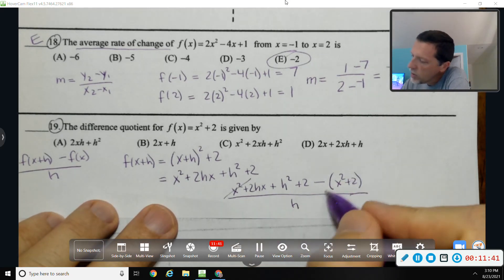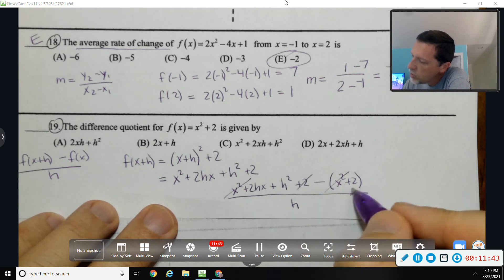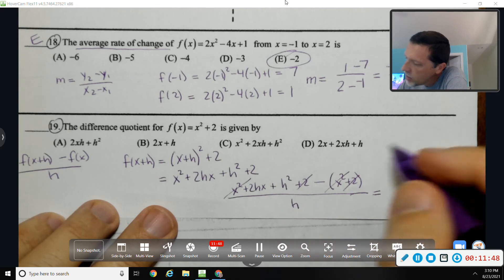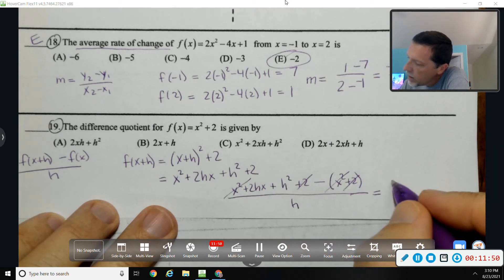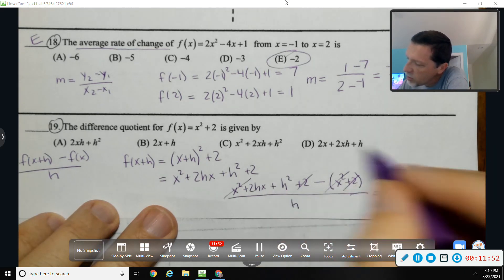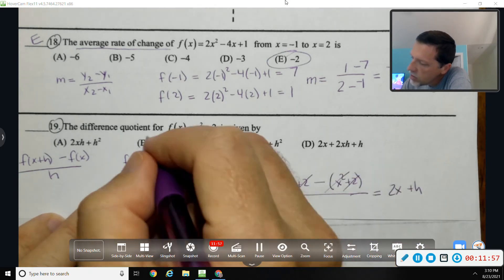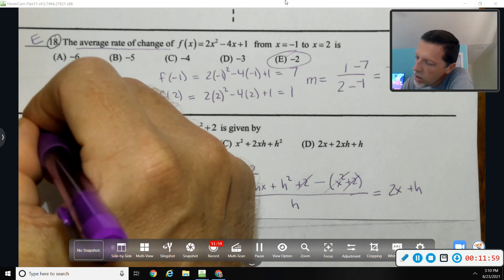So the x squareds will cancel, the twos will cancel. And then we can divide what's left by h. I'm running out of space. I'm going to do this and get 2x plus h, which is answer choice B.